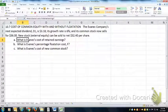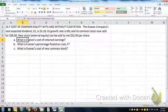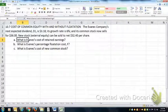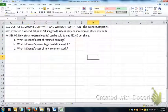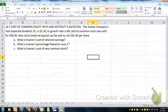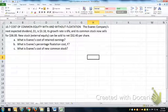This is problem 10.7 from chapter 10 of Brigham and Houston's Fundamentals of Financial Management Concise, 9th edition. Here we're being asked to calculate the cost of common equity with and without flotation costs.